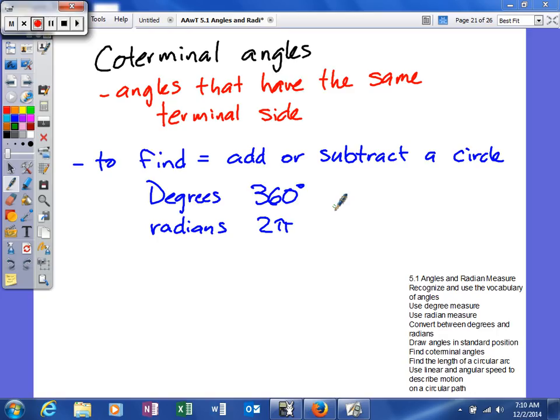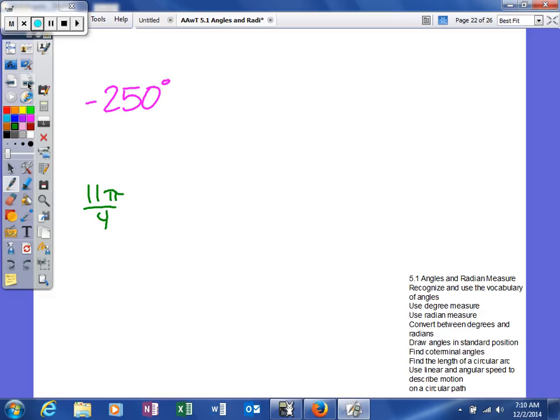What we're doing is learning how to use our tools, because we need to find coterminal angles when figuring out trig function values for certain angles. It's going to be very important later. Let's look at a couple examples.